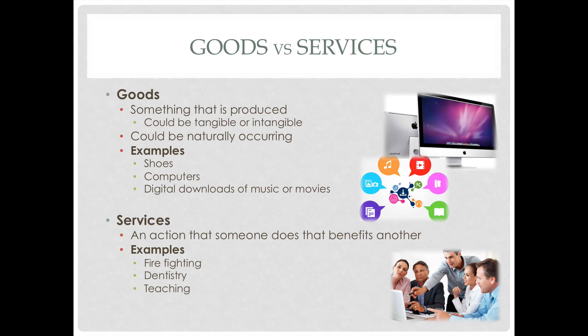First, let's talk about what goods and services are. We're looking at this in the government semester, but we will revisit this concept in more depth when we get to the economics semester. In short, goods are things that are produced. They could be tangible or intangible — things that could be touched, or items that might not be touched but are made and manufactured in some way. Goods could also be naturally occurring, such as coal, oil, water, etc.